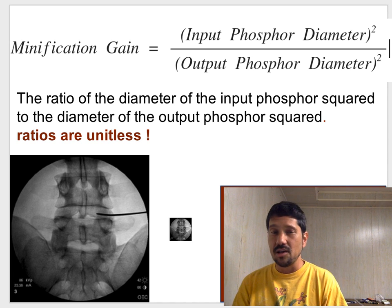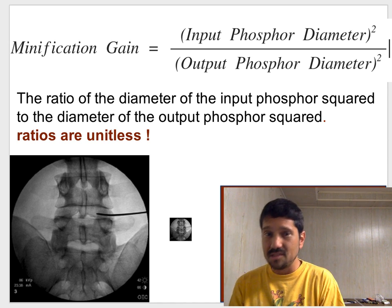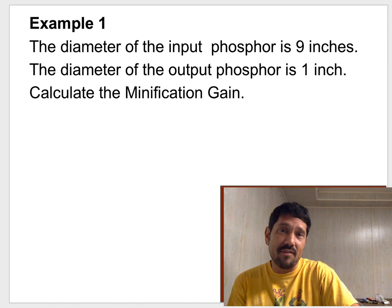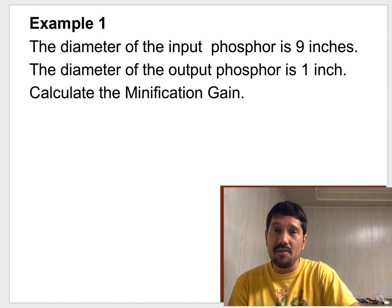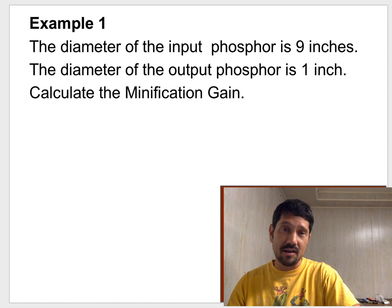So the minification gain is the ratio of the diameter of the input phosphor squared divided by the diameter of the output phosphor squared. And these are ratios, so on my test please do not give me units. Because the correct unit is no unit.